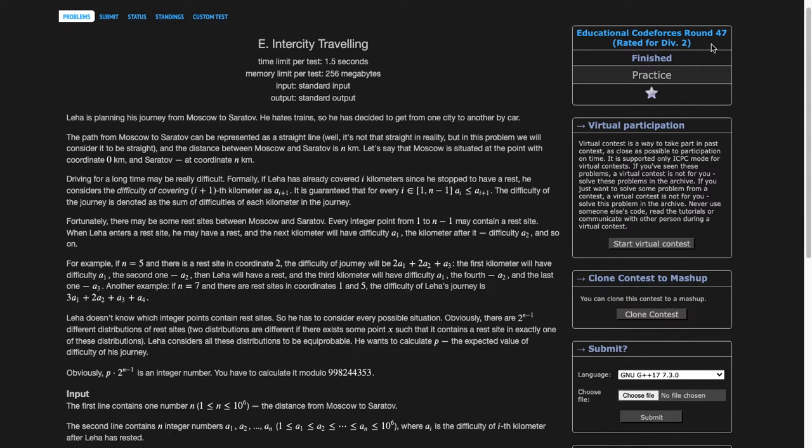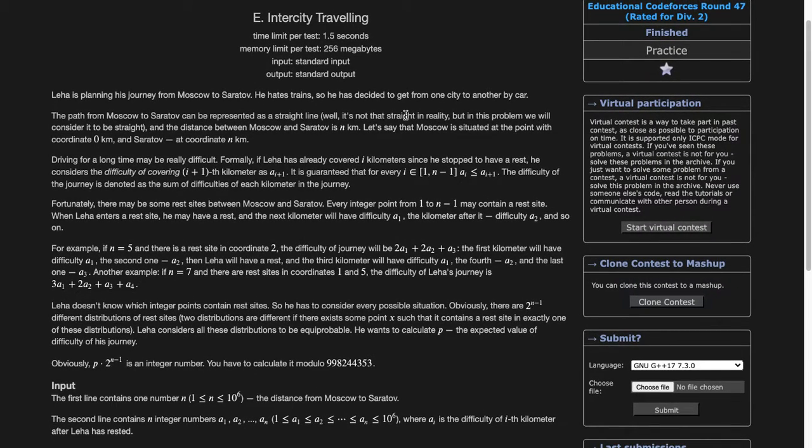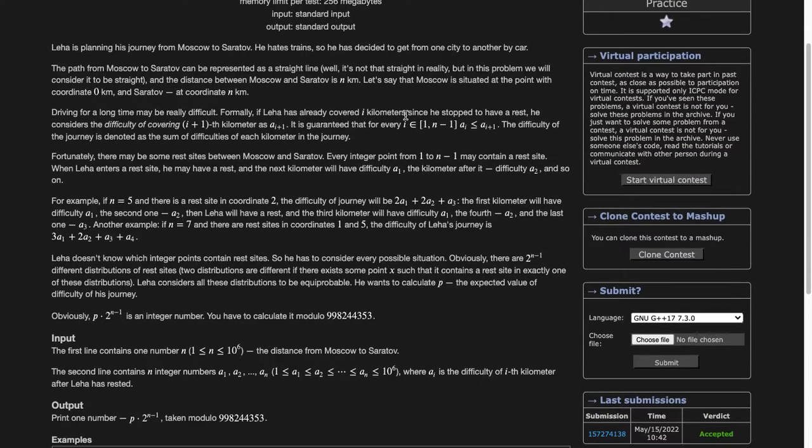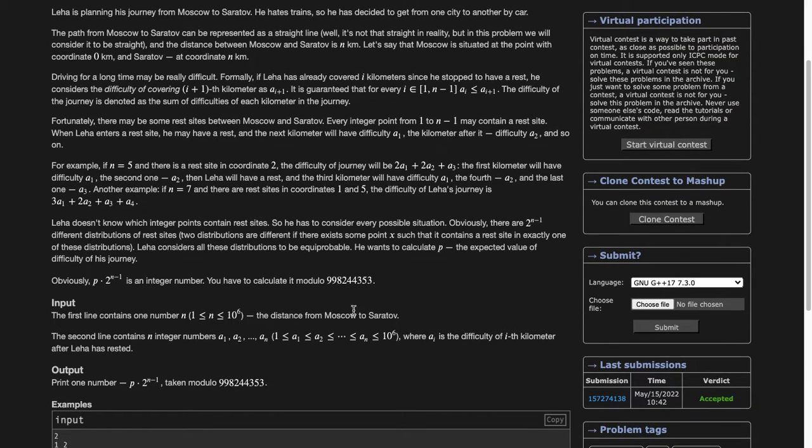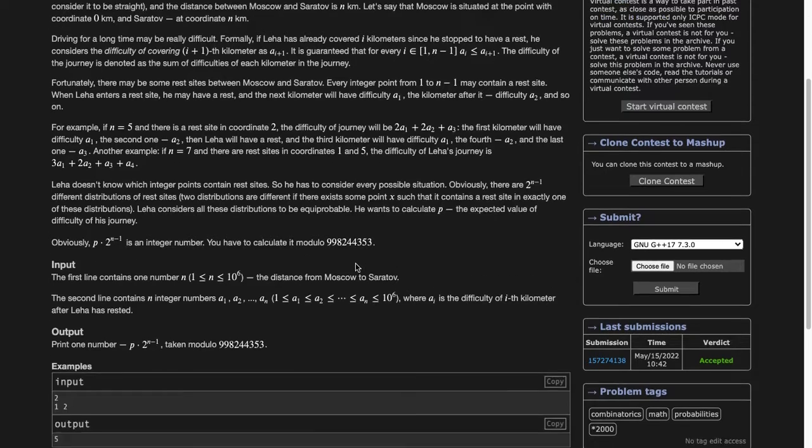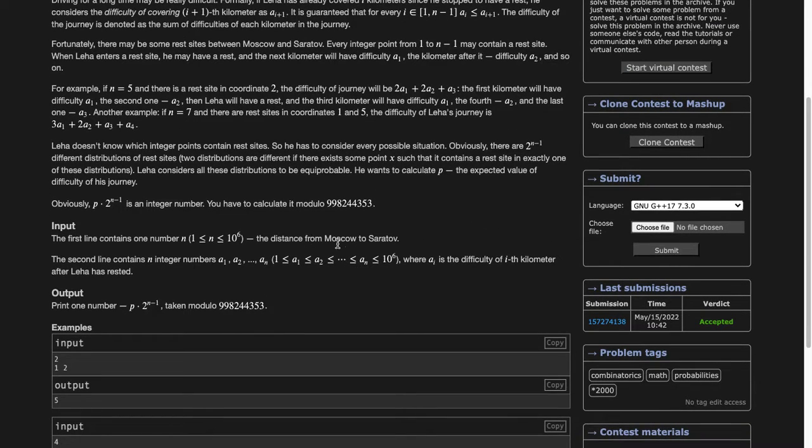We've been given a road with indices numbered from 0 to n. We need to go from 0 to n, and at every index we have an option whether to make it a stop index or not. We need to find the expected value of difficulty of this journey, where p is the expected value of difficulty.